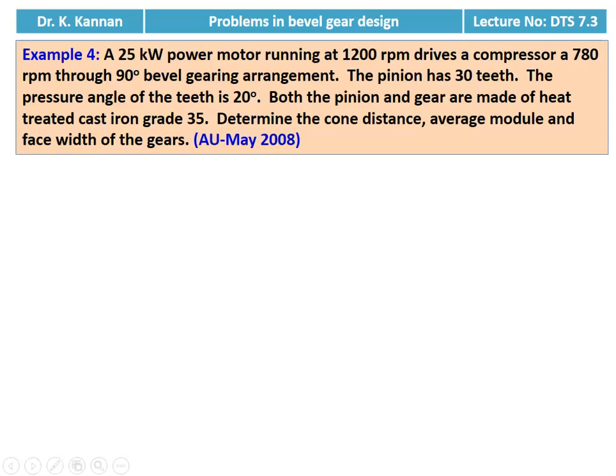Then we take another example. Example number 4: A 25 kilowatt power motor running at 1200 rpm drives a compressor at 780 rpm through a 90-degree bevel gearing arrangement. The pinion has 30 teeth and the pressure angle is 20 degree. Both pinion and gear are made of heat treated cast iron of grade 35. Determine the cone distance, average module, and face width of the gears. This question is from the May 2008 question paper.